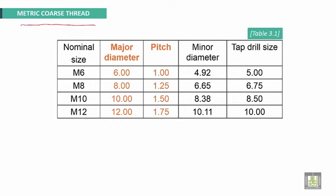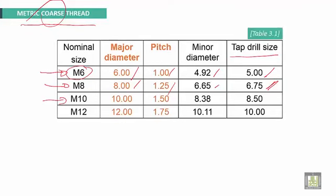Some examples for metric coarse threads: The nominal size symbol for 6 mm is M6, meaning the major diameter is 6 mm. Because it is coarse, the pitch is 1 mm, the minor diameter is 4.92 mm, and the tap drill size is about 5 mm. For M8, the major diameter is 8 mm, pitch is 1.25 mm, minor diameter is 6.65 mm, and tap drill size is 6.75 mm. For M10, the nominal size is 10 mm, pitch is 1.5 mm, tap drill size is 8.5 mm, and minor diameter is 8.38 mm.